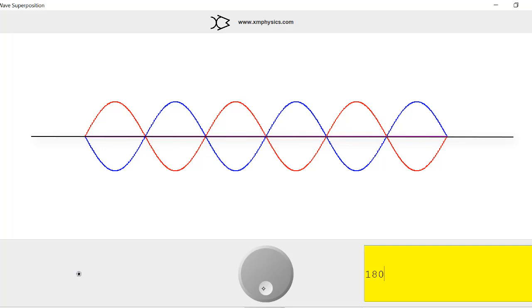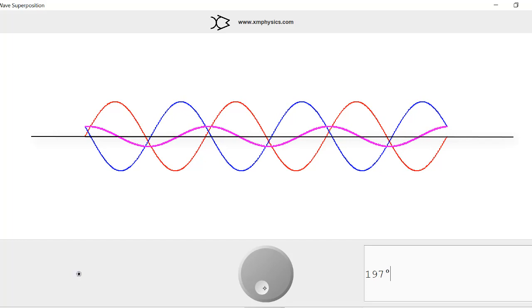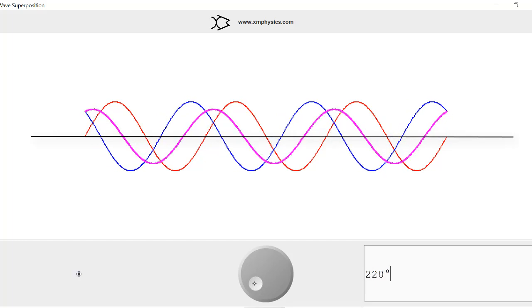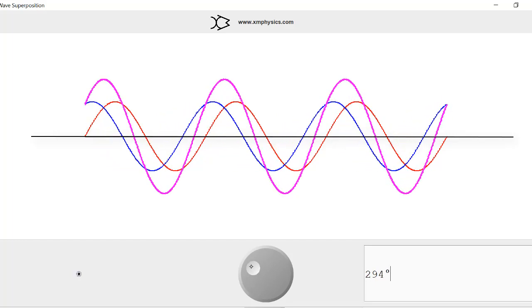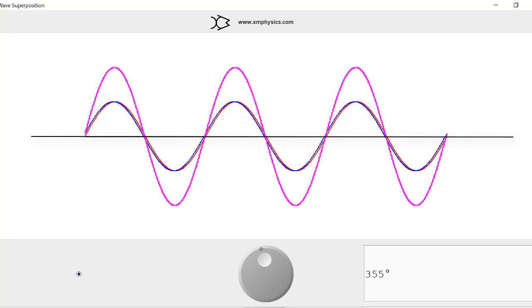Okay, if we increase the phase difference between them further, we get into partial destructive interference, and then we get into partial constructive interference. And when they are off by one full cycle, we are back to constructive interference again. And the whole thing repeats again.